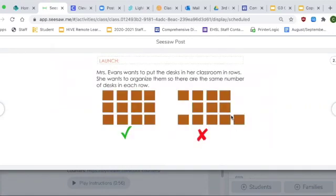This is what you're going to do. Mrs. Evans wants to put the desks in her classroom in rows, so a row goes across. She wants to organize them so there are the same number of desks in each row. This one has the green check mark because each row has the same amount of desks.